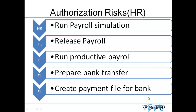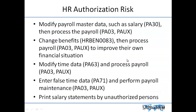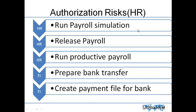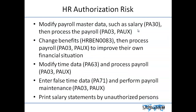Then it's a very big risk. How does it become a risk? If this particular person also has authorization for PA30, they can go and change their own salary, then run all this payroll process for themselves, and get all the money in the bank. Very easy.